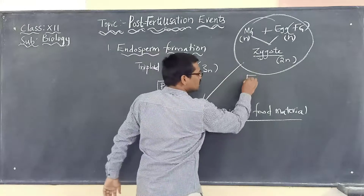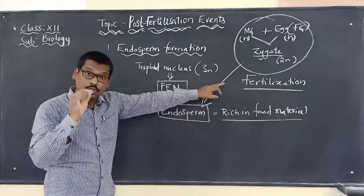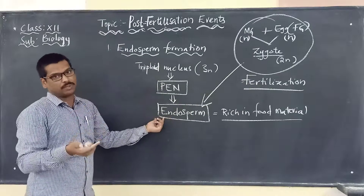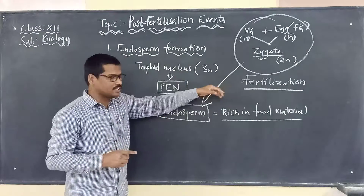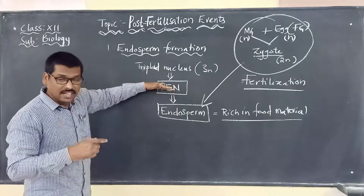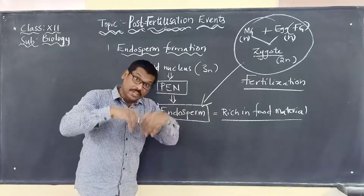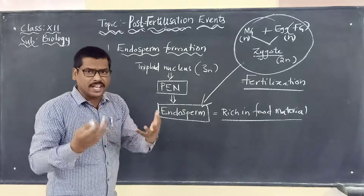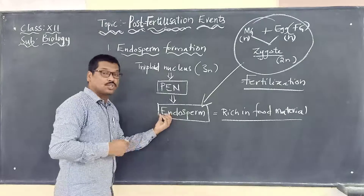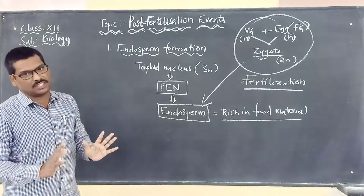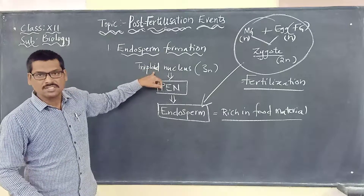The endosperm, which is rich in food material, obtains food from the growing plant. The plant supplies nourishment that is absorbed and stored in the endosperm. Endosperm is rich in food material, formed right after fertilization from the primary endosperm nucleus, which is triploid.